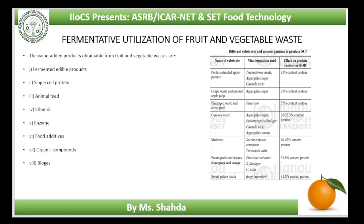It is already clear that wastes from fruits and vegetable processing industries are valuable natural sources for many products with enormous economic potential. We can make a number of value-added products from these wastes. Principally, the wastes include water and organic substances — simple and complex polysaccharides like sugars, starch and pectin, vitamins and minerals. Utilization of waste water is also done. Conversion of organic substances into value-added products through microbial fermentation technologies includes fermented edible products, single-cell proteins, animal feed, ethanol, enzymes, food additives, organic compounds and biogas.